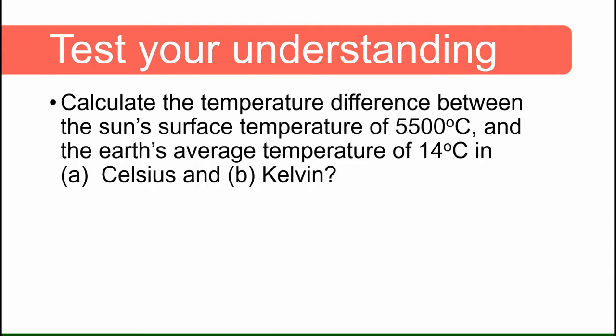Here's another one. Calculate the temperature difference between the Sun's surface temperature of 5,500 degrees Celsius and the Earth's average temperature of 14 degrees Celsius and you need to do this for degrees Celsius and Kelvin.